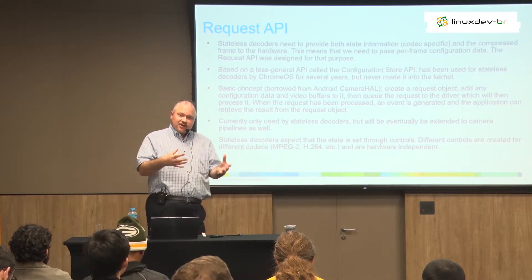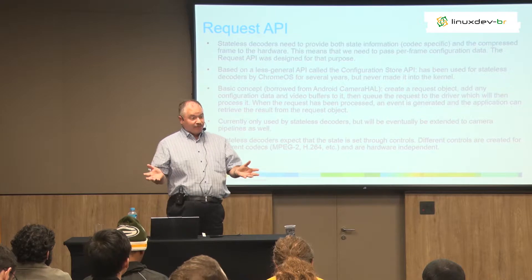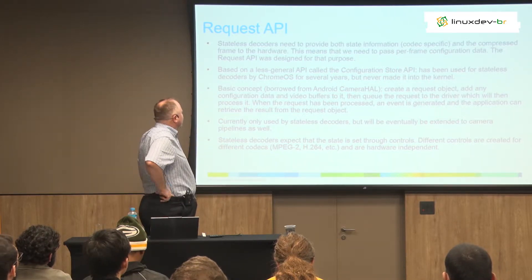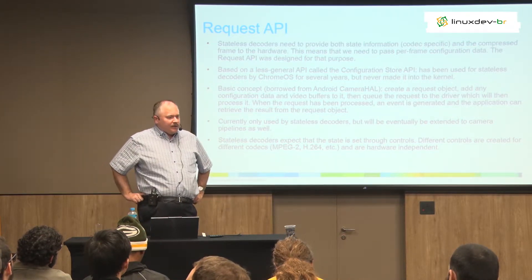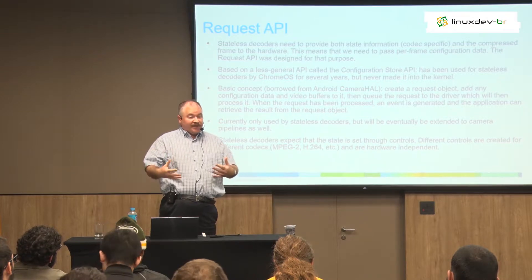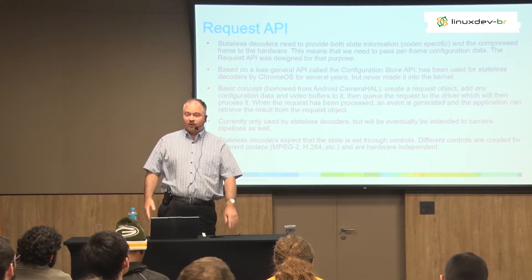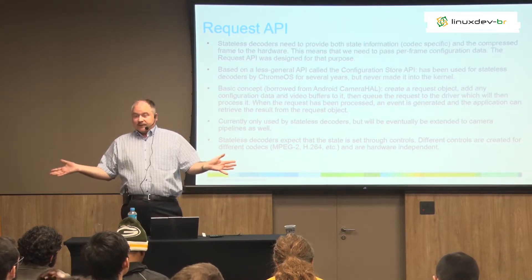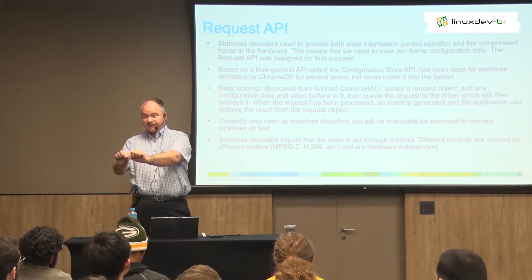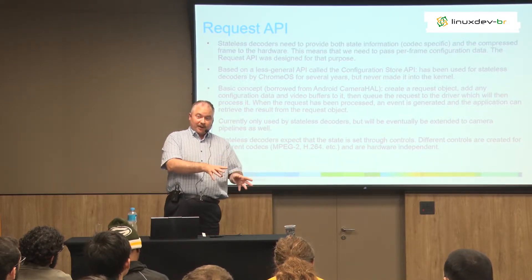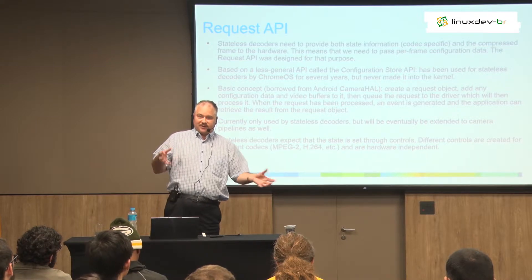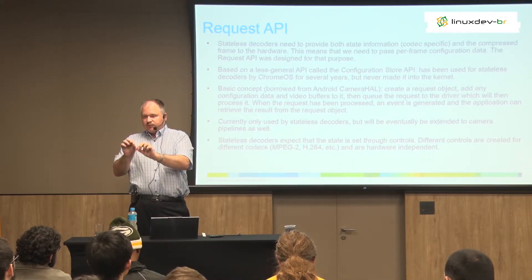Stateless decoders have been around for quite some time, and Google needed it for their Chromebooks because a lot of them are based on Rockchip — Rockchip is stateless. About four or five years ago I wrote what is called the configuration store API — that's basically a predecessor of the request API. It allows you to associate some state information with the frame and just give it to the hardware. That worked great, and Chrome OS had been using that for years internally. But it was never mainlined because it was a solution for a very specific use case — not generic enough, since the same thing is also needed for camera HAL.